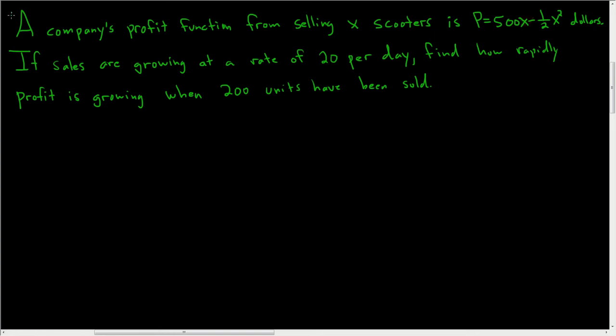A company's profit function from selling X scooters is P equals 500X minus one half X squared dollars. If sales are growing at a rate of 20 per day, find how rapidly profit is growing when 200 units have been sold. This is a really simple problem. When you're first working out a problem like this, it's usually a good idea to write down what you're given and what you need.